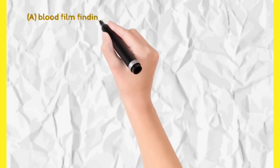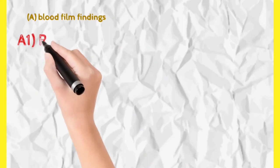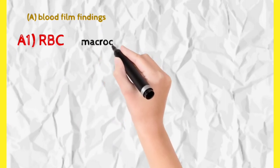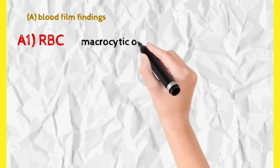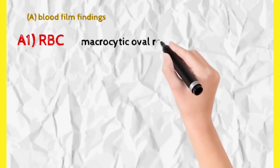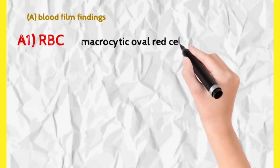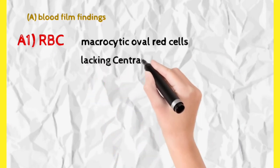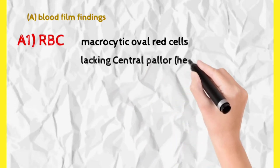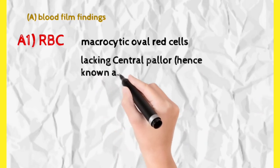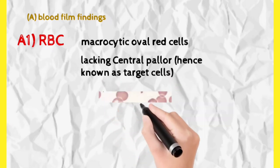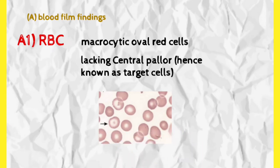In blood film findings, RBCs will be macrocytic — bigger than 7.2 micrometers. Since nucleus is present in these RBCs because nuclear maturation has not taken place, the usual central pallor present in normal RBCs will be absent in these macrocytic oval RBCs. This makes them look like target cells. Normal RBCs have a faded center (central pallor) due to absence of nucleus, but here central pallor is lacking, and so they are known as target cells, as evident in the diagram.